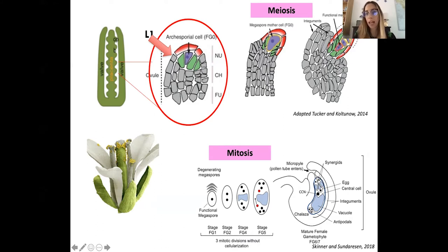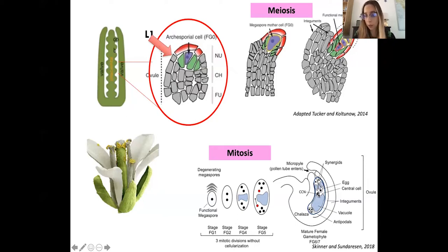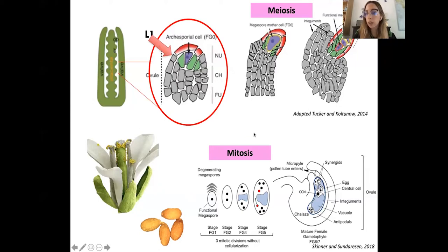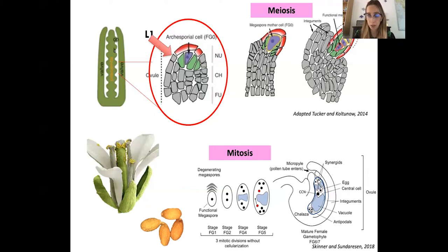The functional megaspore undergoes three rounds of mitosis, giving rise to the mature female gametophyte or embryo sac, which has seven different cell types. Upon fertilization, the male delivers two sperm cells inside the embryo sac — one fuses with the egg cell and another with the central cell, forming the seeds. Seeds are very important for humans as a major food source, so studying female germline differentiation and fertilization is critical for our society.